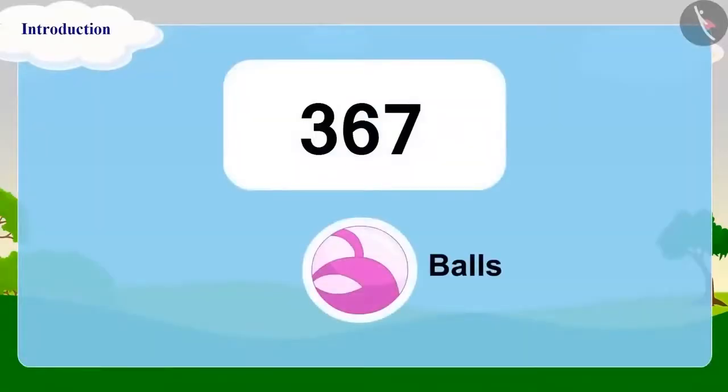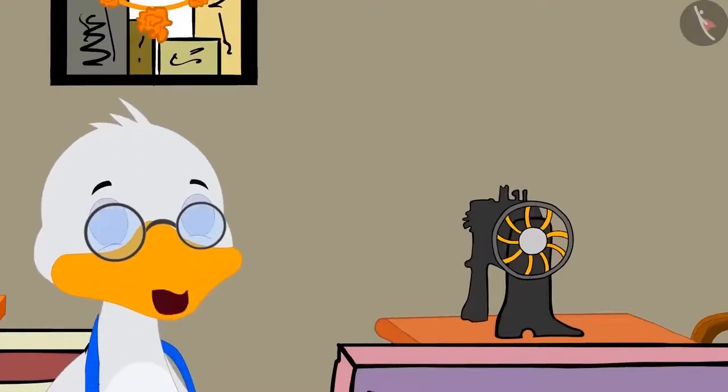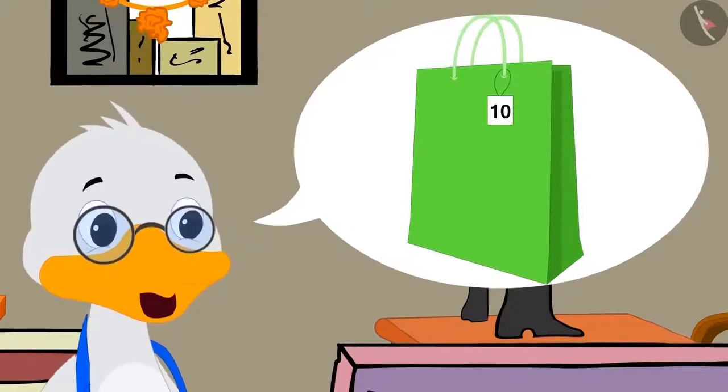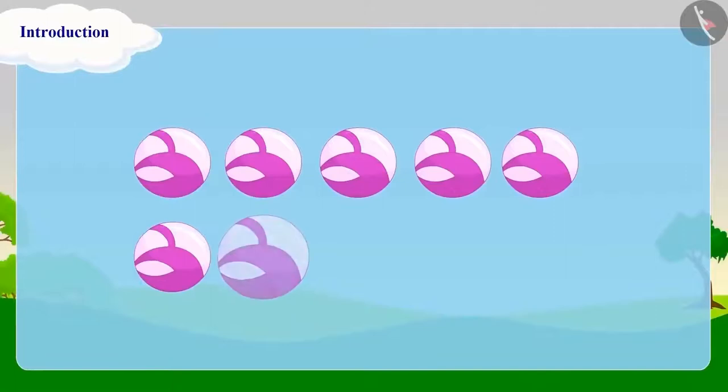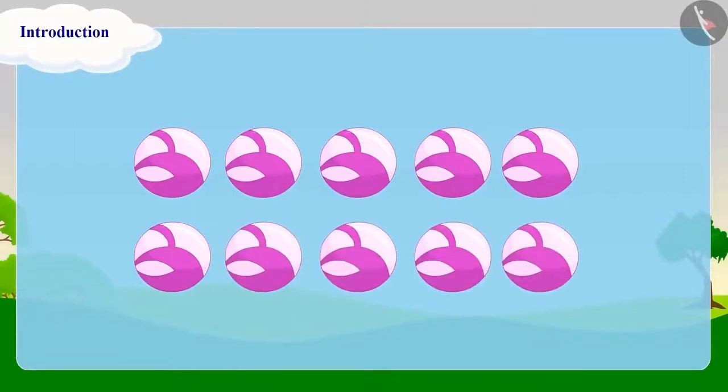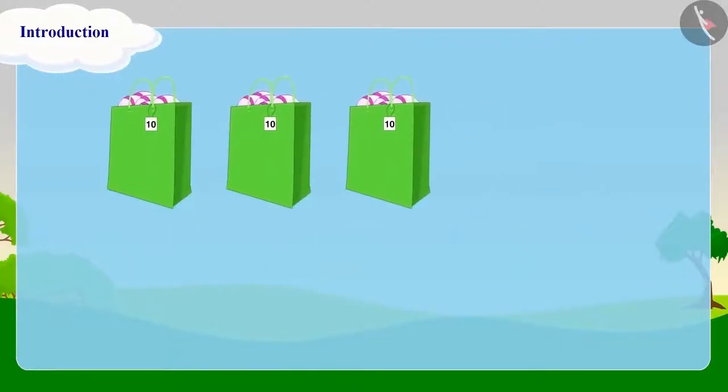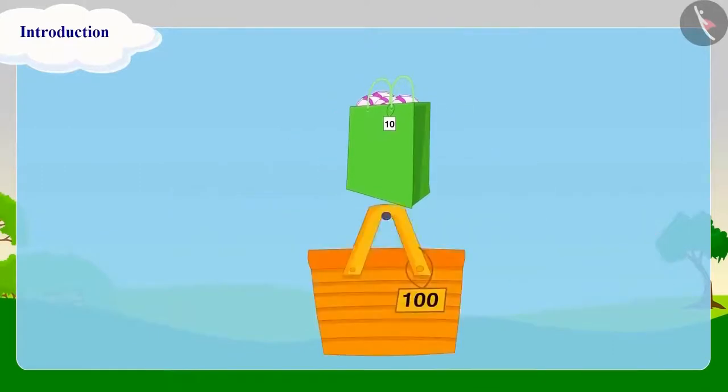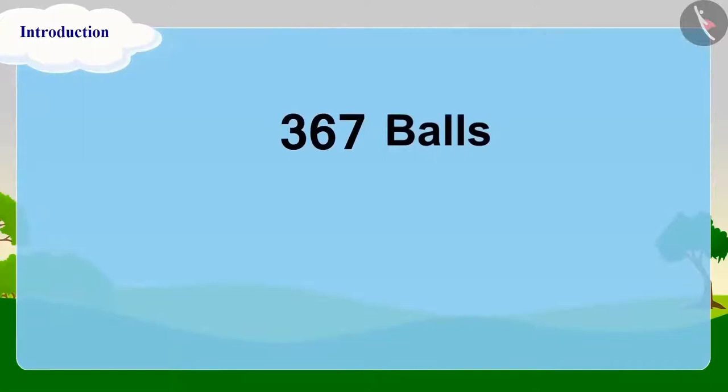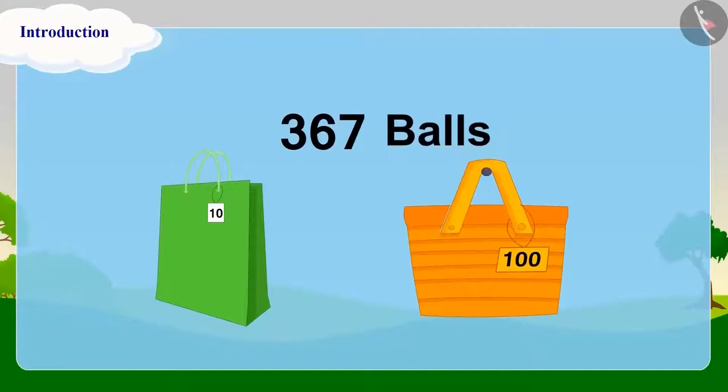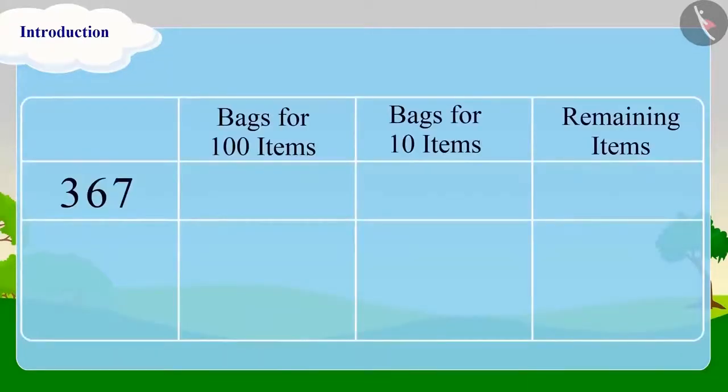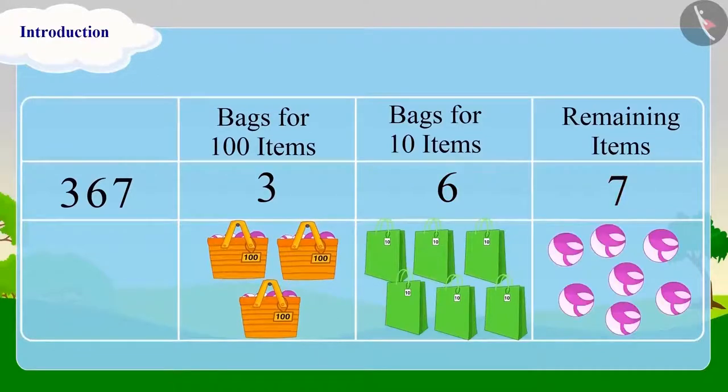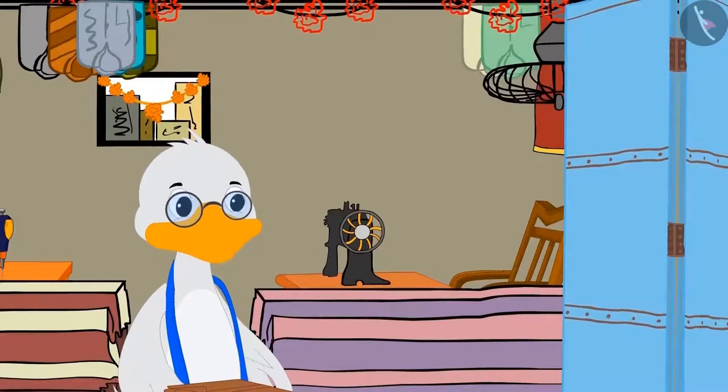Suppose you have to buy 367 balls from Bunny. I have two types of bags. One, in which you can keep 100 items. And the other, in which you can keep 10 items. Let's first count these balls one by one. But doing this will take a lot of time. So why not count them in groups of 10 using the bags meant for 10 items? But this will still take quite a while. So why not collect all 10 bags and make a bag of 100 items? In this way, we can easily count 367 balls with the help of these bags. If we do this, we will have 3 bags of 100 items, 6 bags of 10 items and 7 balls. Did you see Appu? How fast we counted these balls?